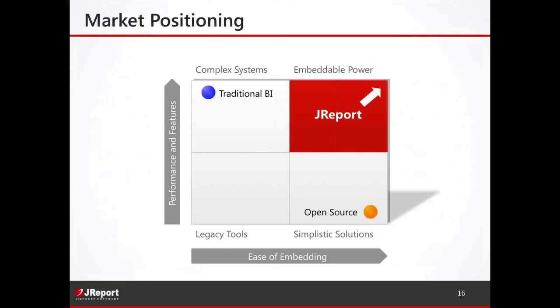Just a quick slide on market positioning. Traditional BI systems are great for the enterprise — very enterprise-ready with a lot of features — but they come with very complex tool sets, require a lot of training, have very high cost, and are susceptible to vendor lock-in. It's also very difficult to embed these large BI systems into existing applications. On the other side, open source technologies are easy to embed but often have a very focused set of features. Getting new features is difficult because you're sometimes dependent on the community, and the commercial versions of open source solutions tend to be high cost as well. Where J-Report fits is the best of both worlds — we offer the enterprise-ready, full-feature capability of traditional BI systems with the power of embedding of the open source technologies.